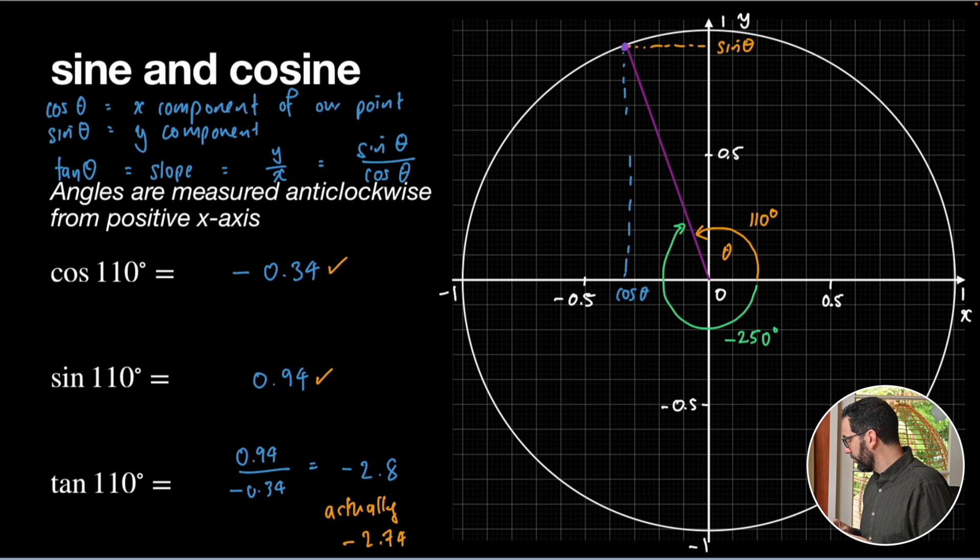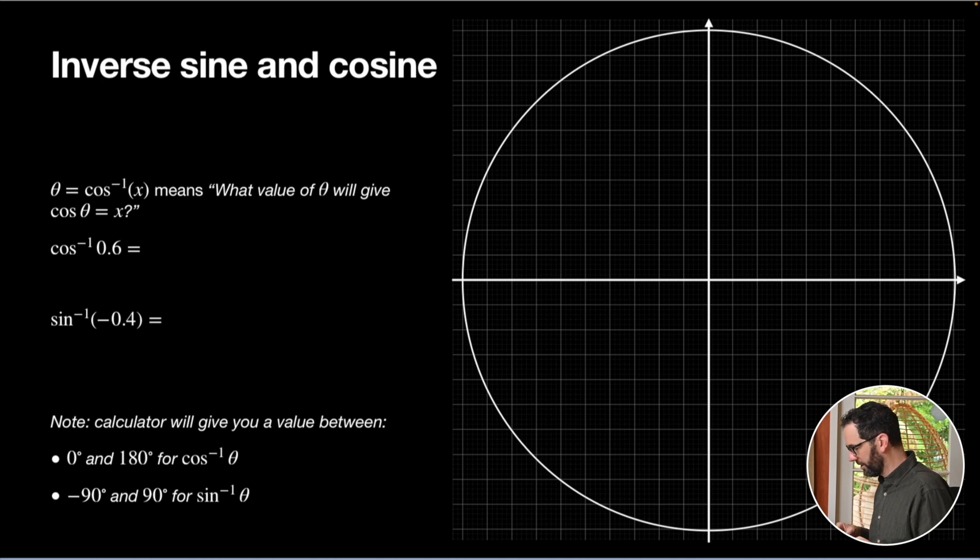Now, it's very often we want to go the other way. We want to know, given a value, an x or a y coordinate, what is the angle that would give that? So, this is called the inverse cosine and sine functions. And they essentially tell us if cosine is equal to a certain value, then what is the angle? So, that's what you understand by this notation here. What value of θ will give me cosine of that angle equals x? So, let's again illustrate it with some examples.